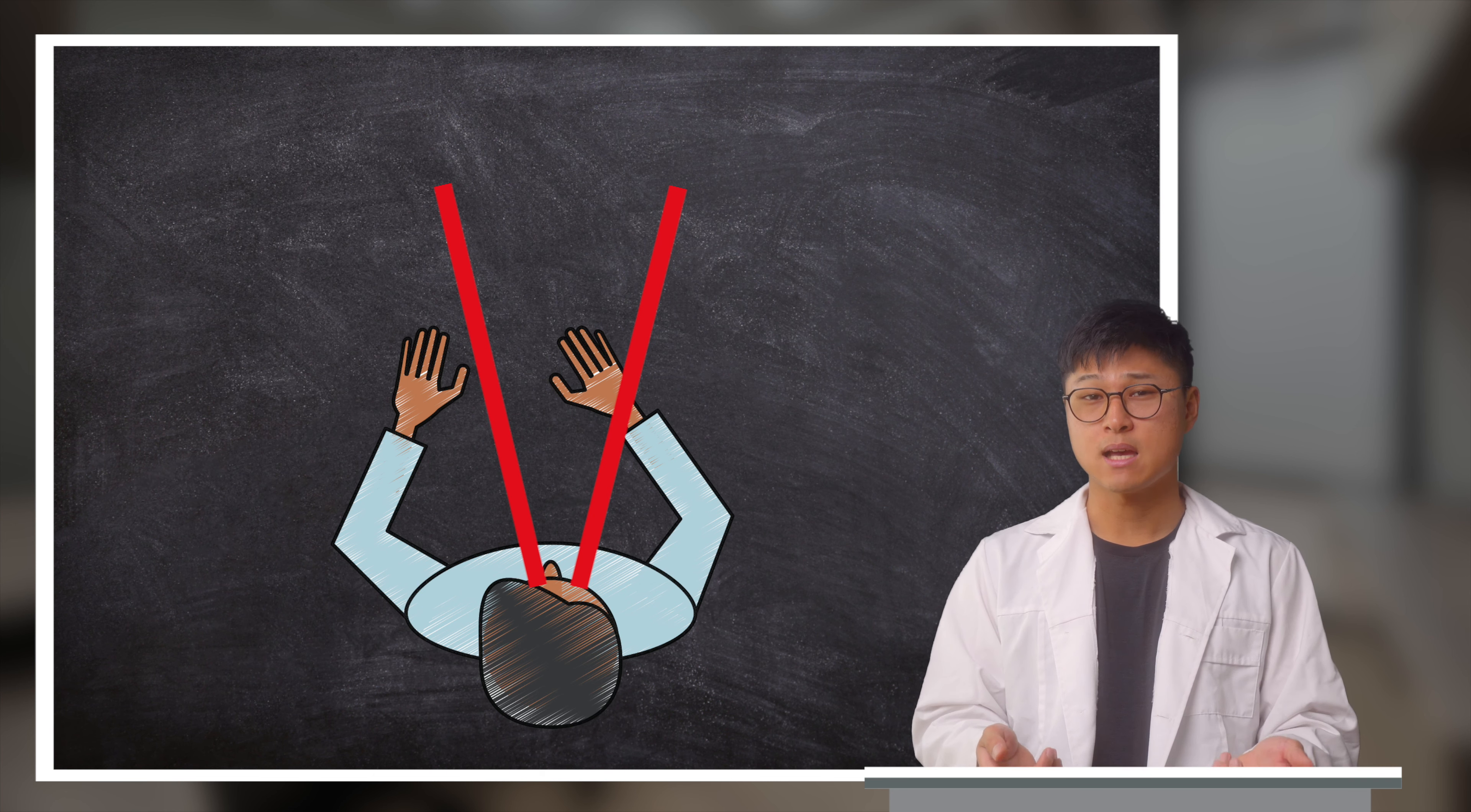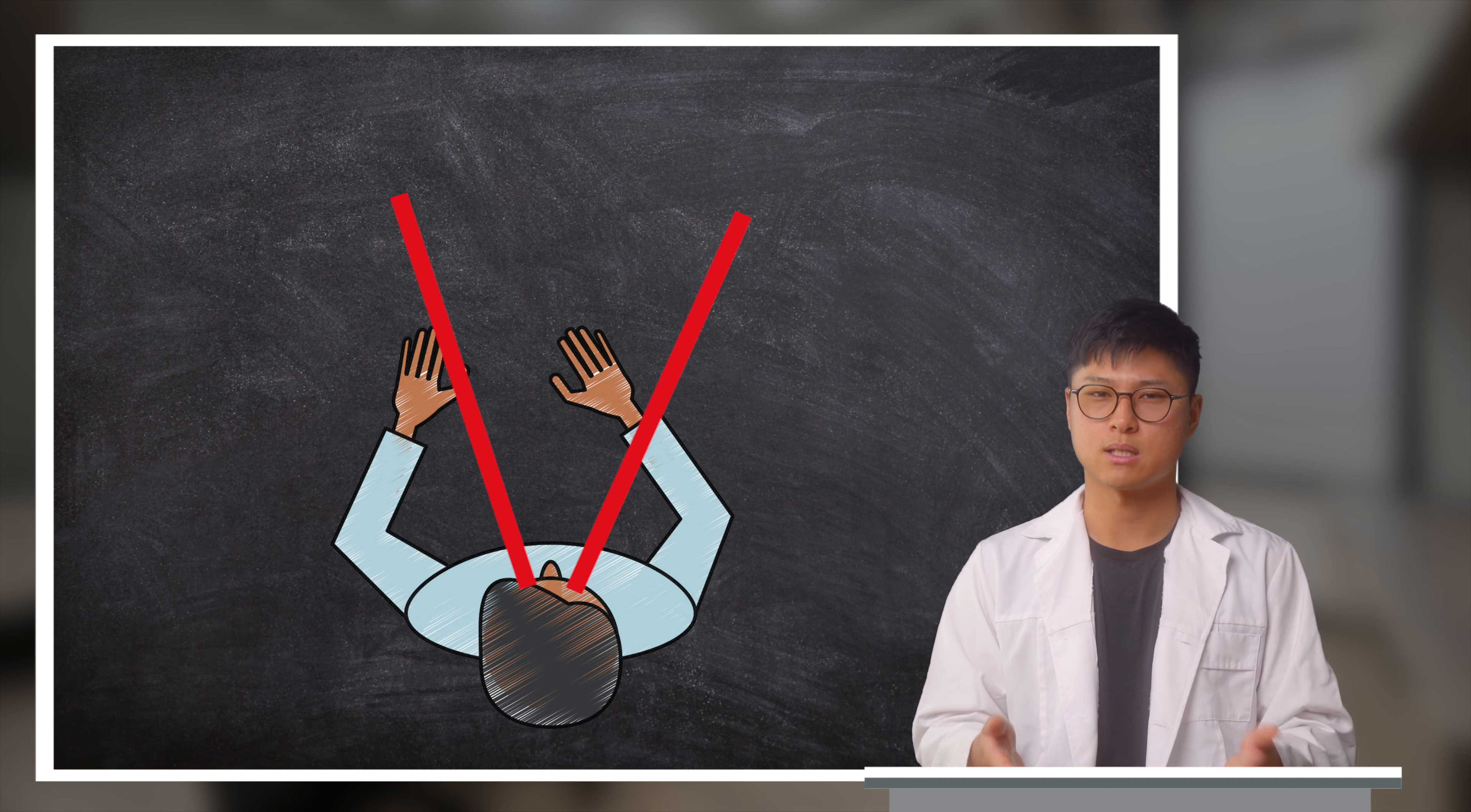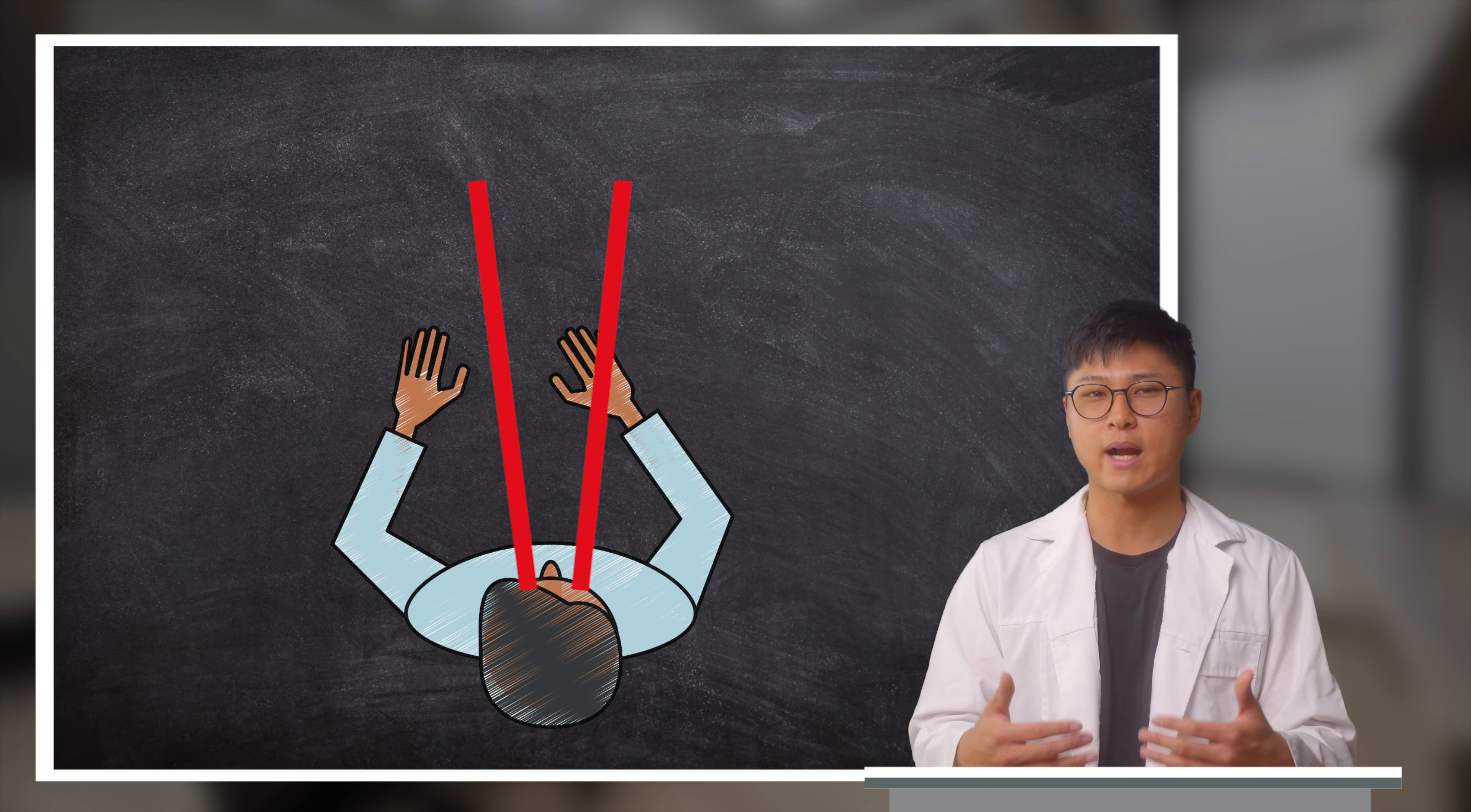Remember what I said about our eyes having a default alignment? Well, this varies on the individual. Some may have eye sockets that allow for perfectly aligned eyes, whereas some others may have a large deviation. If the deviation is small enough, then our muscles can work off the difference, counteracting the misalignment.